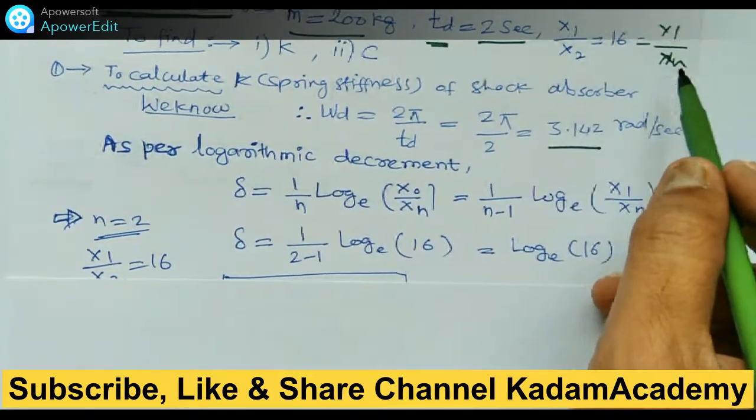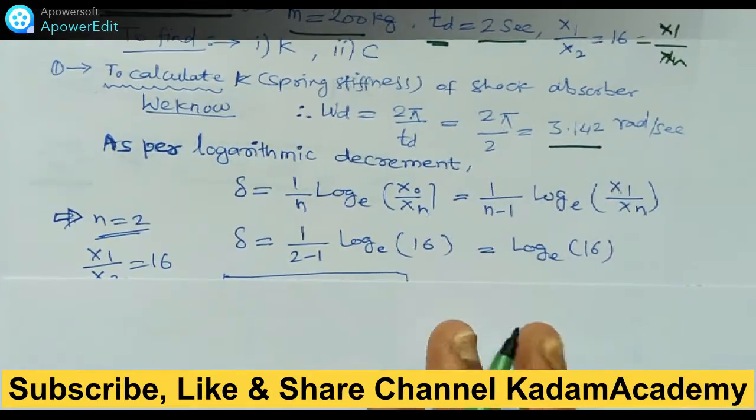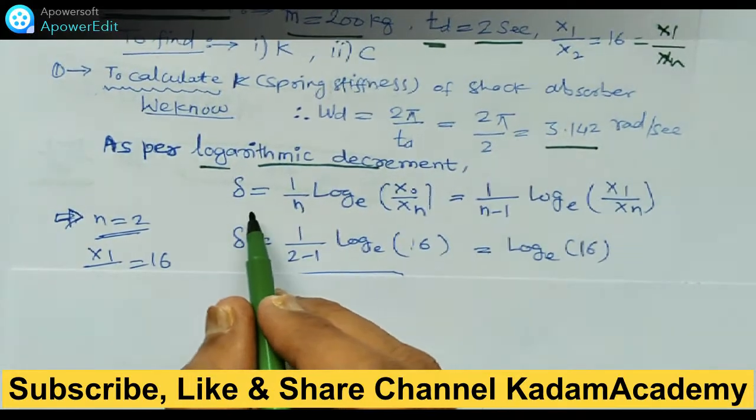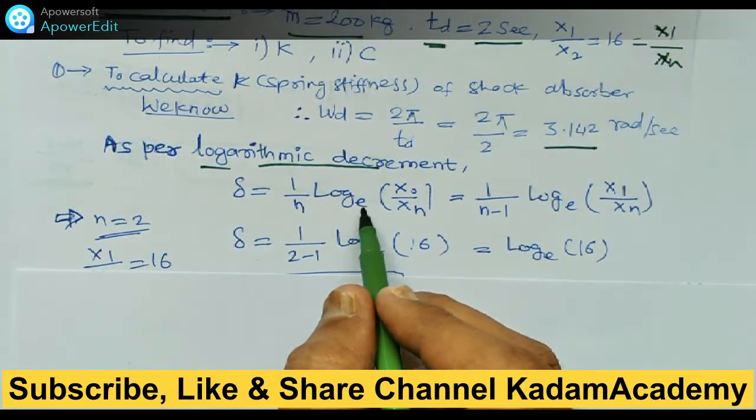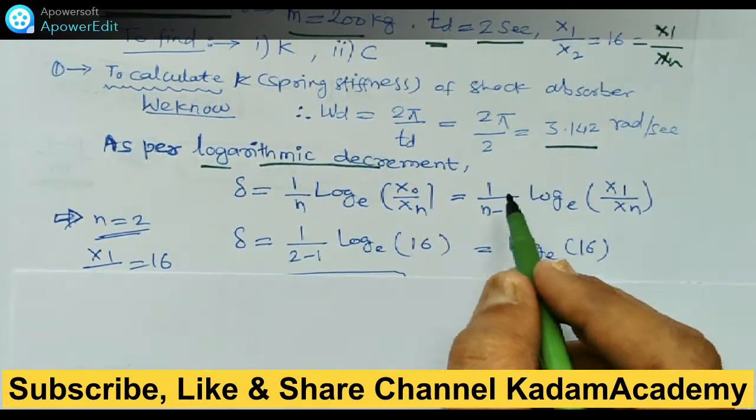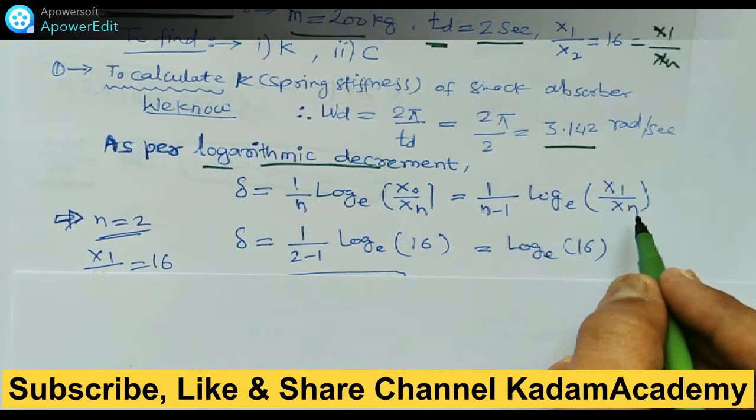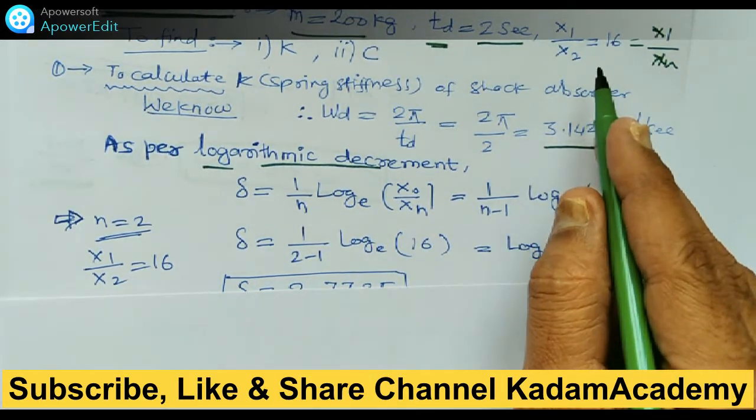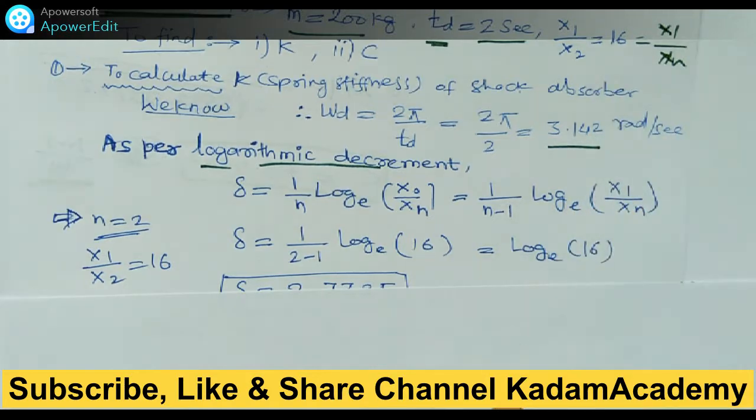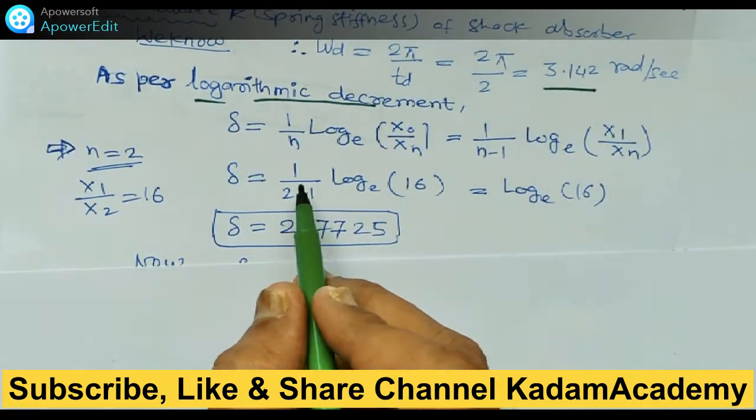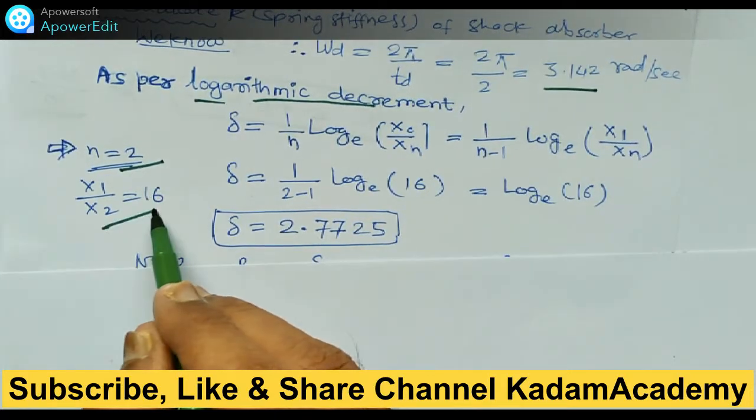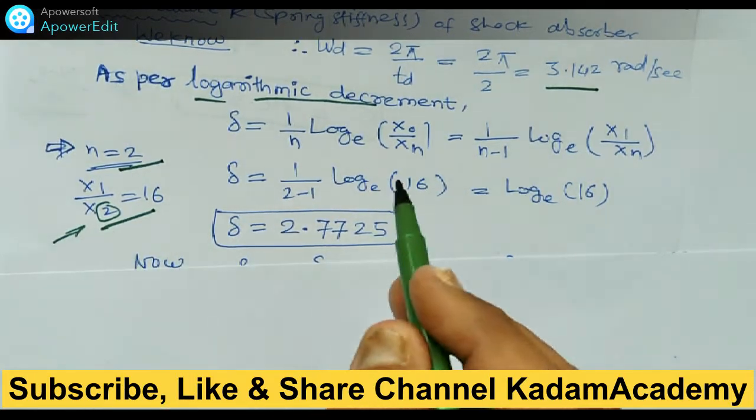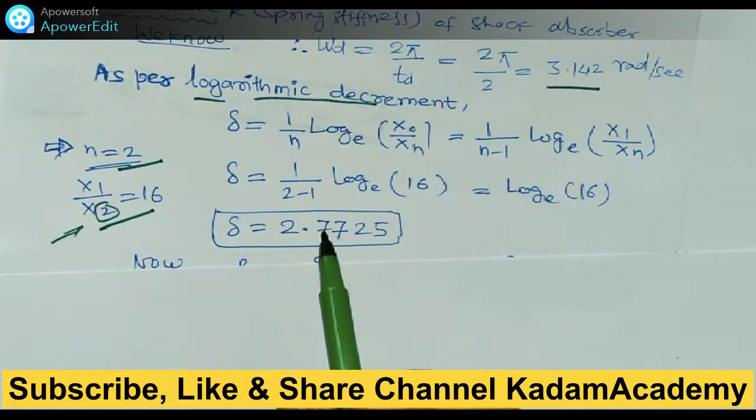From the data, x1 by x2, we can use the logarithmic decrement formula. Delta equals 1/n log to the base e of x1 by xn. Here n = 2 and x1 by x2 = 16. Putting these values, delta becomes 2.772.